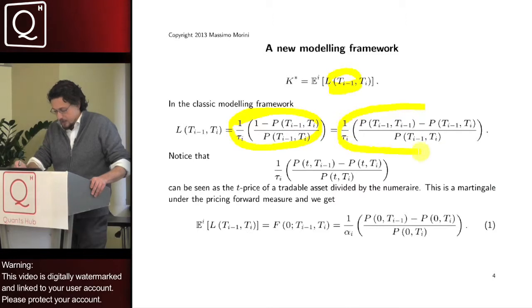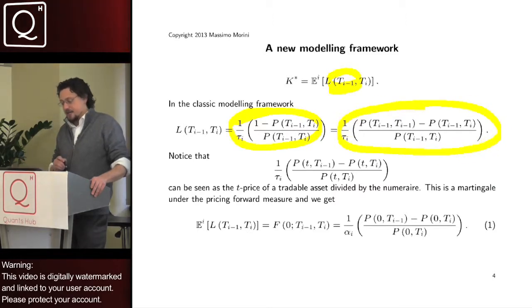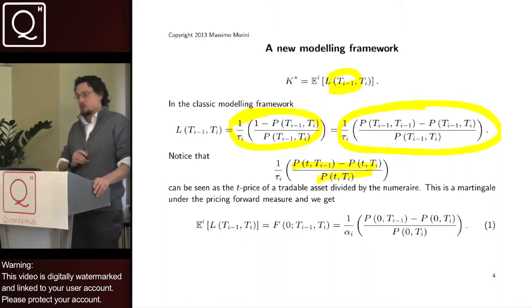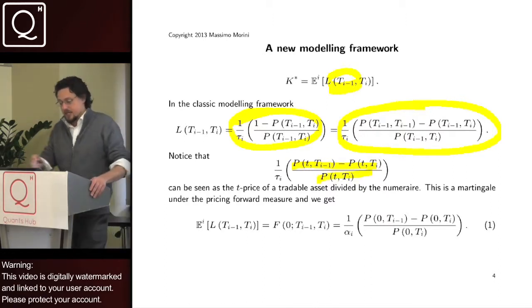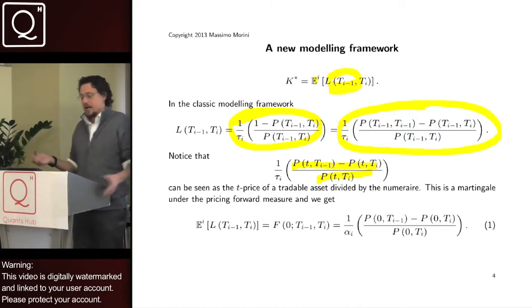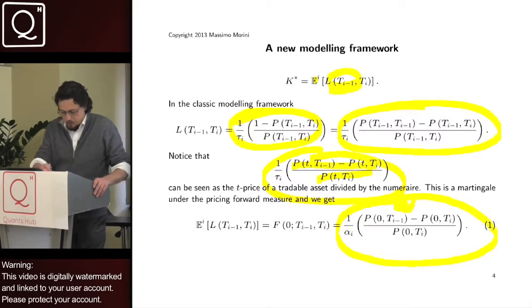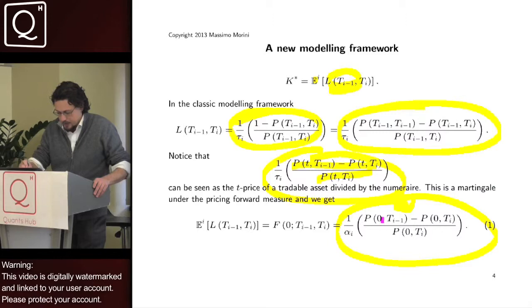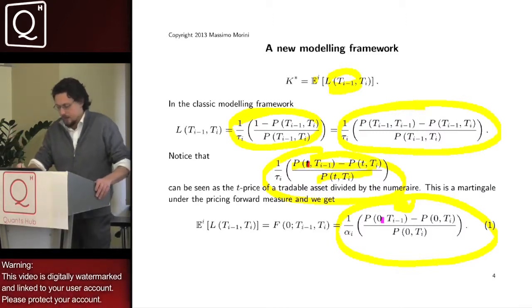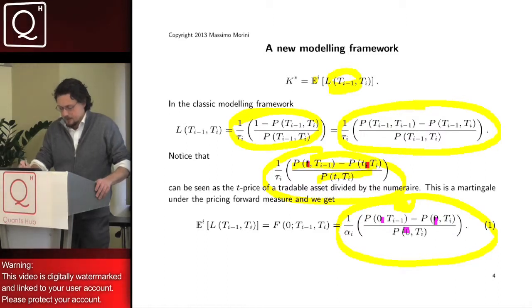That if you look, shows that this guy is nothing other than a tradable asset divided by the numeraire under which you are taking expectation. This is a martingale, so the expectation of this is the same expression putting zero in the place of T everywhere, like it happens with every martingale.